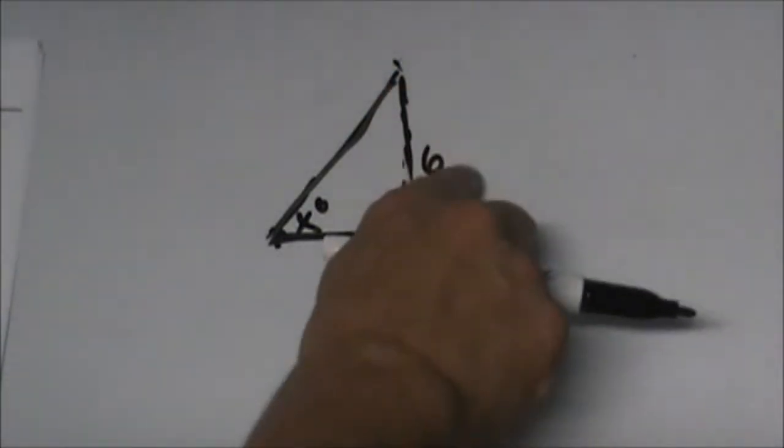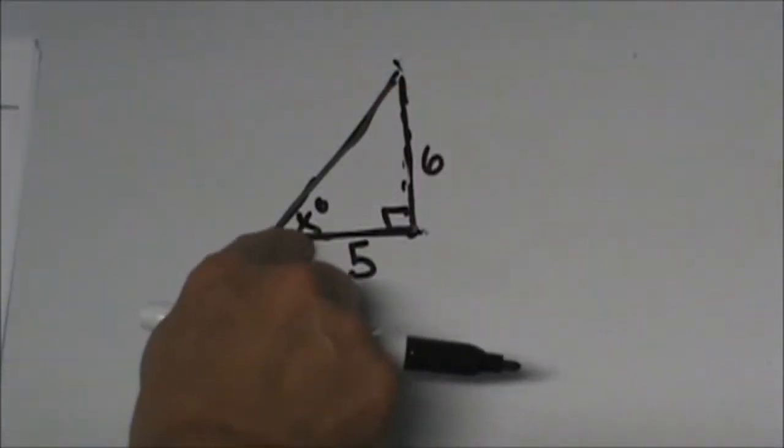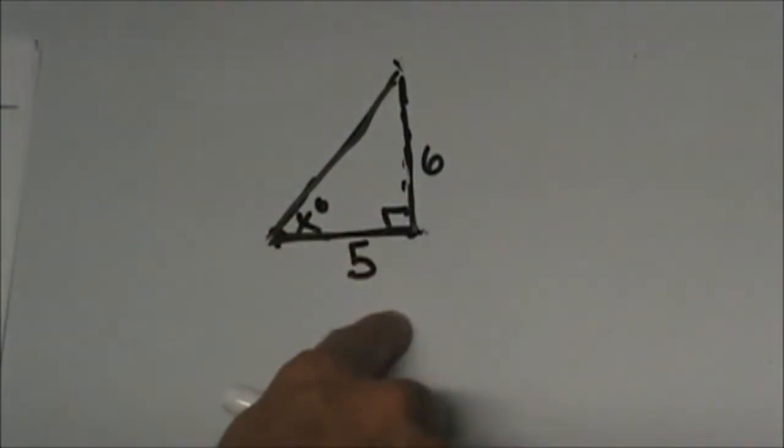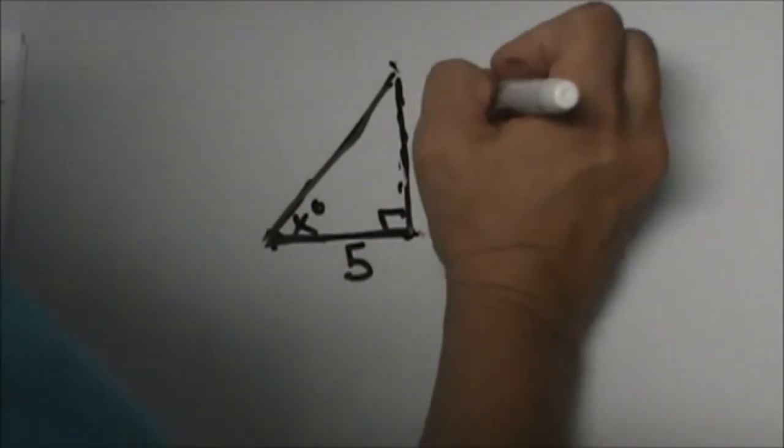Which two sides do we have? From this reference angle we have opposite and adjacent. So this one is a tan problem.